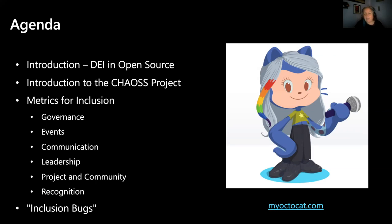I'm going to introduce you to something called the CHAOSS project, which is an open source collaboration of projects working on metrics around inclusion, but also a lot more in open source. I'm going to walk you through some of those metrics, give you some background about how they came to be, and how at Microsoft we are enacting those. And then the notion of inclusion bugs — using these types of metrics to report and fix bugs around the inclusion of people.